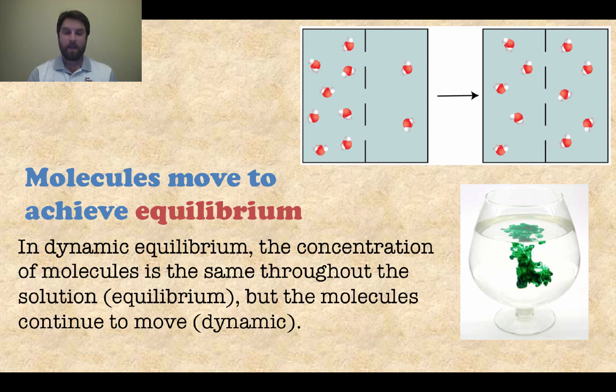So again, the main point here, molecules are going to move to maintain equilibrium. And that's what we call dynamic equilibrium because it is always changing. So the molecules are going to continue to move back and forth, back and forth in a dynamic way, meaning ever changing, to make sure that equilibrium is achieved.